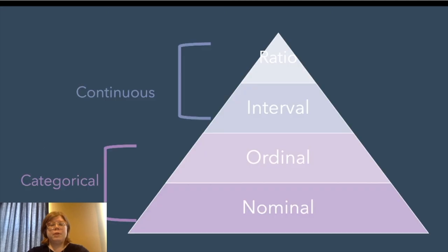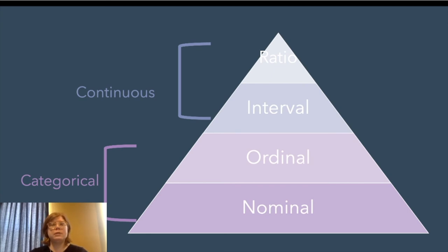You can think of level of measurement as the hierarchy of specificity of measures — basically, how specific is a measure? How precise is a measure? You can think of it hierarchically. The lowest, most basic level of measurement is nominal.